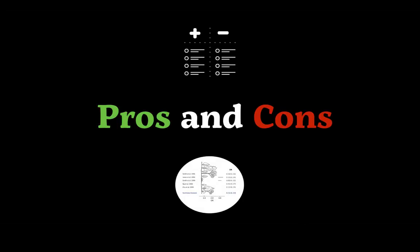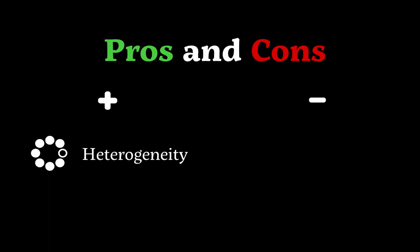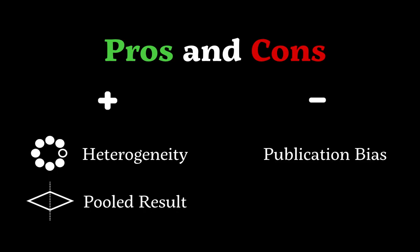Looking at the pros and cons: there are things that the forest plot is really good at doing. Identifying heterogeneity is one of them, both via the eyeball test and via the I-squared statistical heterogeneity measure. It's also really good at showing a pooled combined result of different studies together. However, it is not a good plot or test to show publication bias — which looks at smaller studies that may not have been published because they didn't have a statistically significant result. For that, a funnel plot is a much more appropriate tool to use.